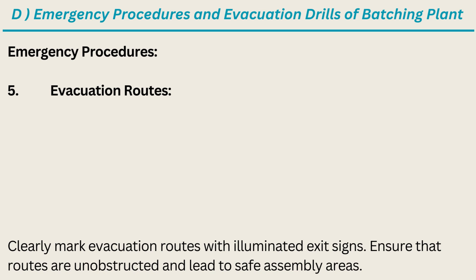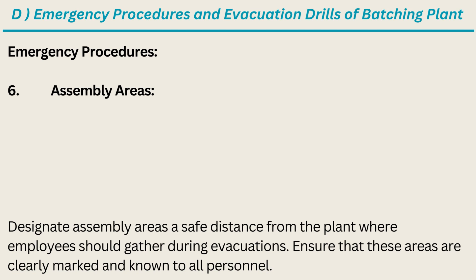5. Evacuation Routes — clearly mark evacuation routes with illuminated exit signs. Ensure that routes are unobstructed and lead to safe assembly areas. 6. Assembly Areas — designate assembly areas a safe distance from the plant where employees should gather during evacuations. Ensure that these areas are clearly marked and known to all personnel.